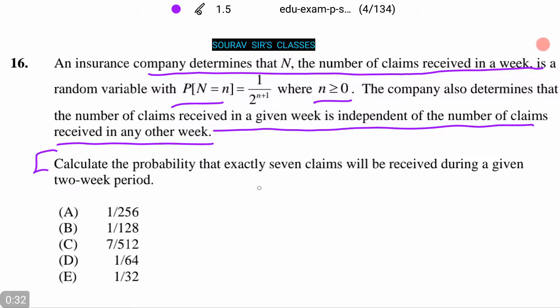We need to calculate the probability that exactly 7 claims are received during a given two-week period, and following are the options.